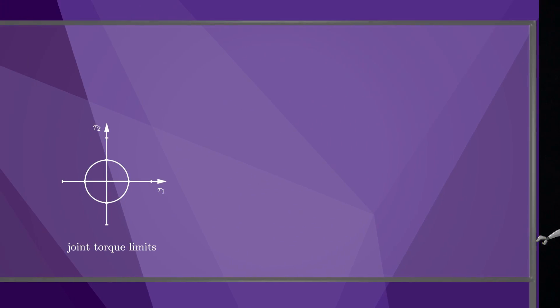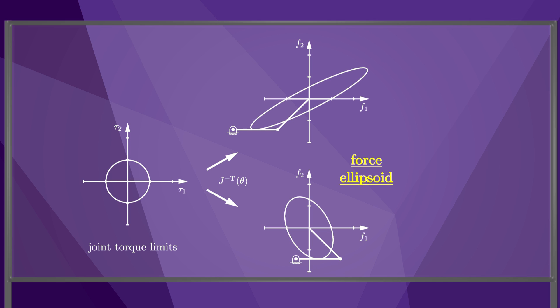It is common to consider joint torque limits that are circular, or more generally spherical. In this case, the torque limits map to an end effector force ellipse or ellipsoid. As with the manipulability ellipsoid, the force ellipsoid depends on the configuration of the robot.